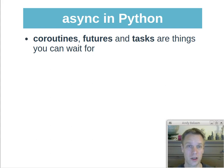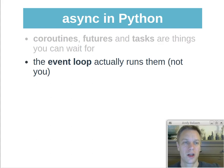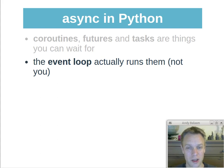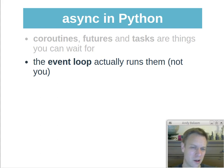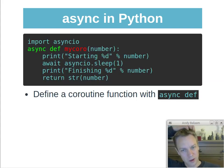Coroutines, futures, and tasks are all just things that you can wait for — something that can go off and run and then later on you can get a result back in that asynchronous way. The other word you need is the event loop. The event loop is the thing that runs these coroutines, futures, or tasks. Instead of running them like you normally do with a function, you give them to the event loop and the event loop runs them. That's how it manages to pause them, do some stuff in the middle, and then come back later.